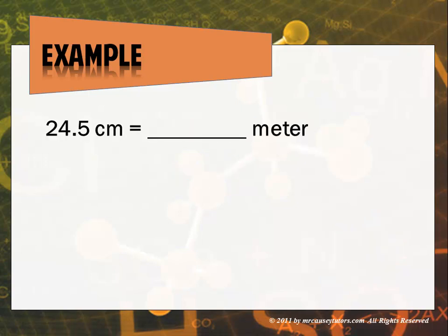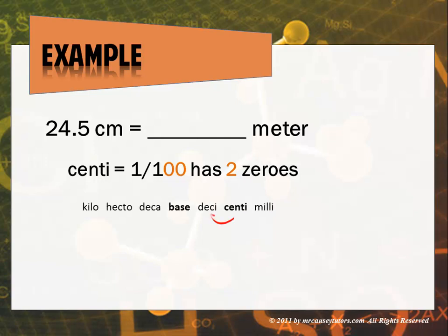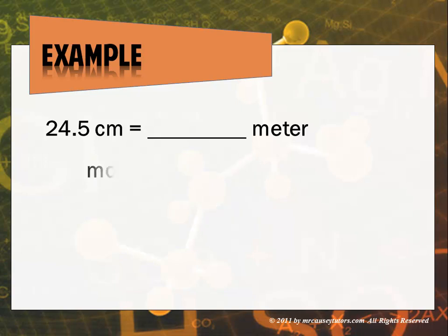24.5 centimeters equals how many meters? Again, it's small to large. We're going to divide. And centi has two zeros in it, so we're going to move two times. And we're moving to the left, and voila.